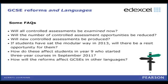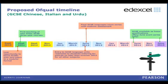Students in Year 9 who started a three-year course in September 2011 will be doing their assessments in 2014 and will be affected by these changes. Regarding other languages, separate sessions have been arranged for French, German, Spanish, Arabic, Greek, Japanese and Russian. Generally, the overall message is the same: assessment is moving to the end of the GCSE course and there will be no individual unit resits.